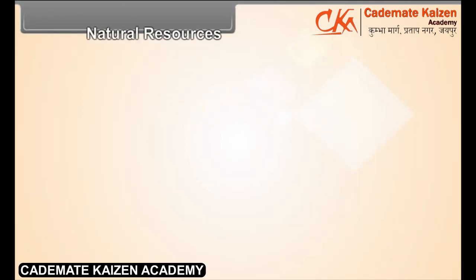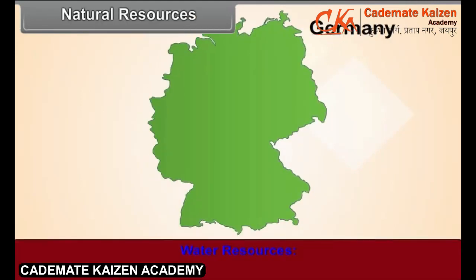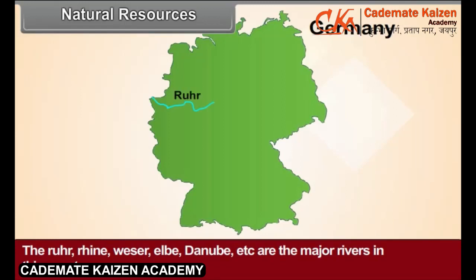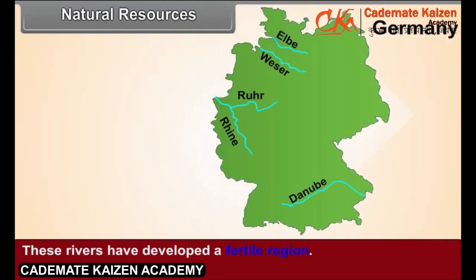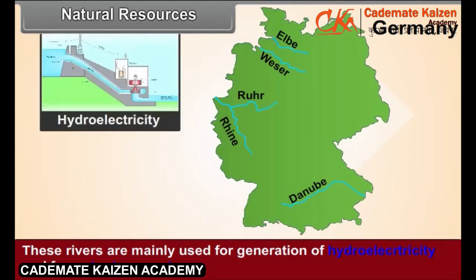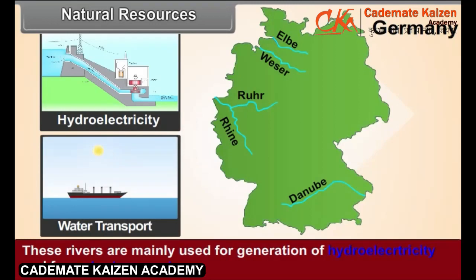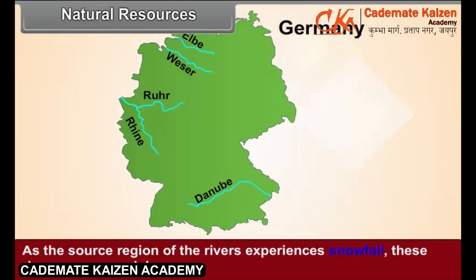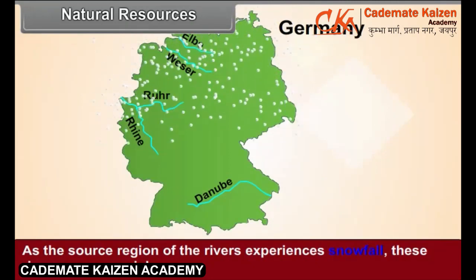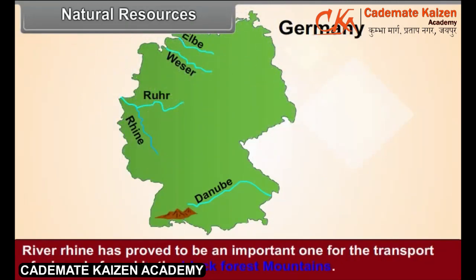Natural Resources — Water Resources. The Ruhr, Rhine, Weser, Elbe, Danube, etc. are the major rivers in this country. These rivers have developed a fertile region and are mainly used for generation of hydroelectricity and for water transport. As the source region of the rivers experiences snowfall, these rivers are perennial. River Rhine has proved to be an important one for the transport of minerals found in the Black Forest Mountains.